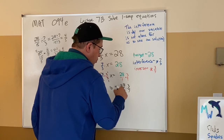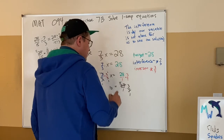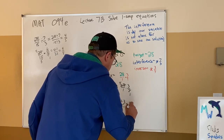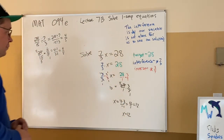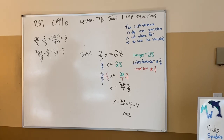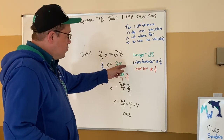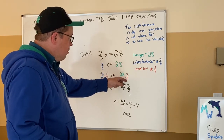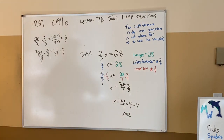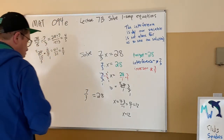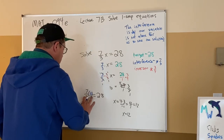So when you have a fraction times your variable, multiply by its reciprocal. You could have said 'divide by 7/3' on both sides, but that would switch to multiplying by 3/7 anyway — extra steps for the same work. I think x = 12. Check: (7/3) × 12 should equal 28. Using a calculator: 7 abc 3 times 12 equals — that will confirm it.